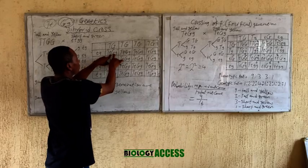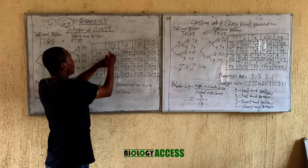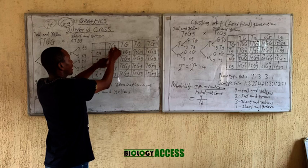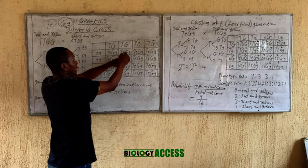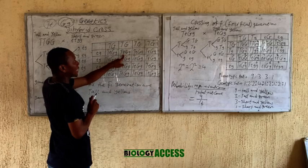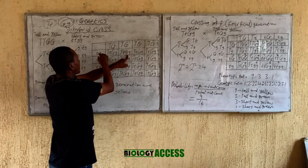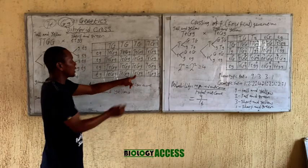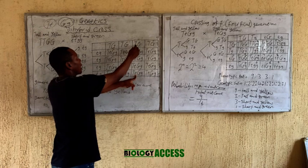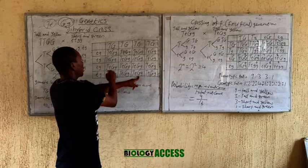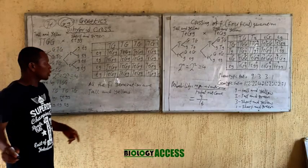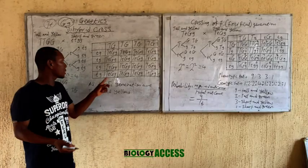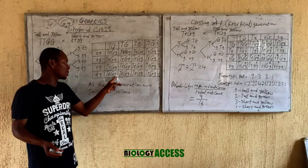Once you set up the Punnett square, the first column is connected to this gamete and to this gamete. Capital T is written first, followed by small letter t, then capital G and small letter g. The second space is connected to this gamete and this gamete, so capital T and small letter t — the same letter must be together, and capital letter must come first — then capital G and small letter g.